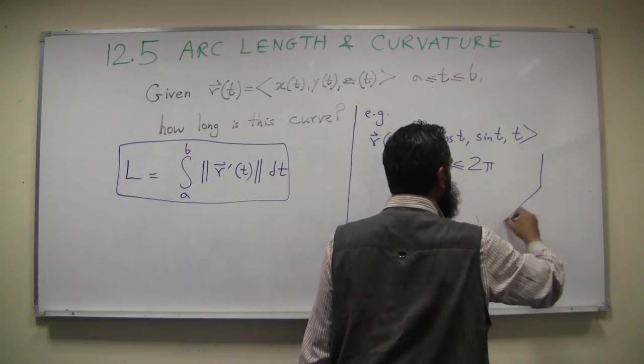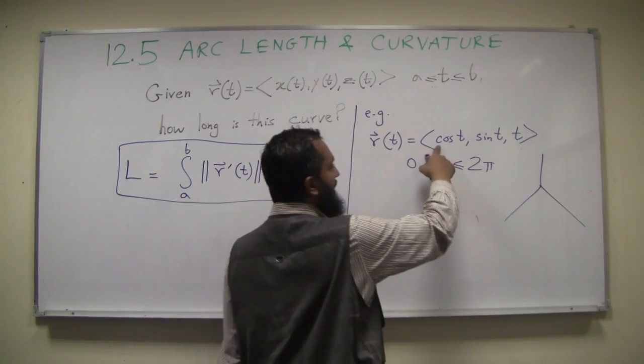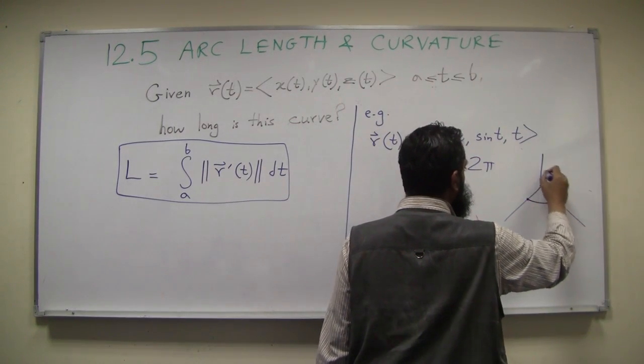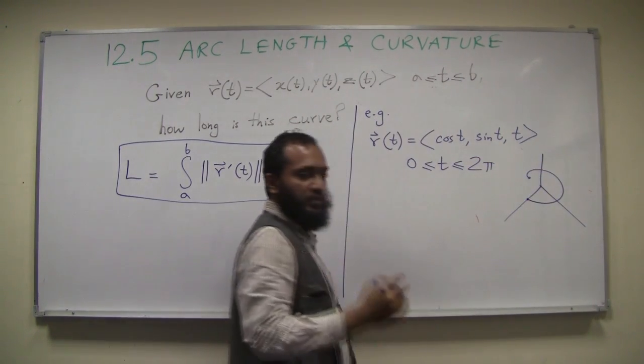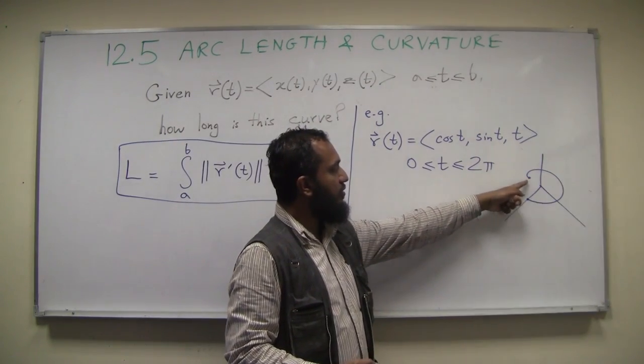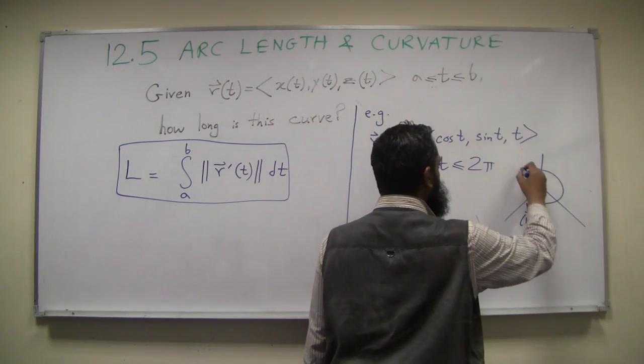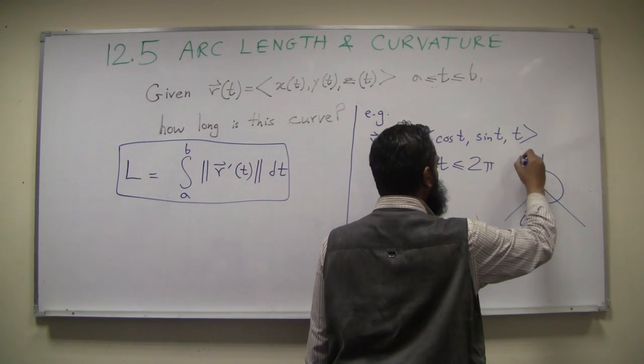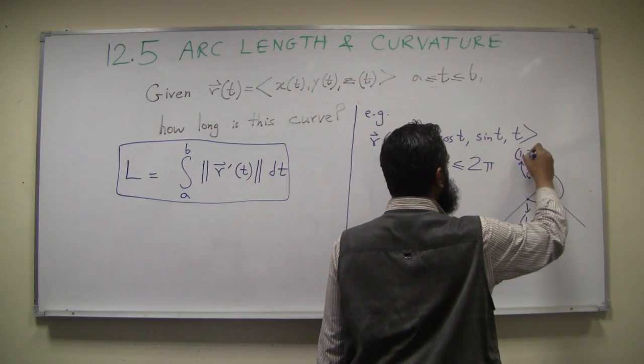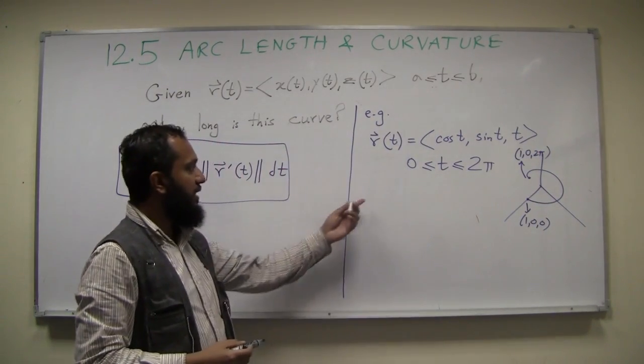Let's draw the graph of this roughly to see what we're talking about. When t is 0, this is (1, 0, 0), so here, and then it comes up. This is one turn of the helix going from (1, 0, 0) to—this point is (1, 0, 0) and this point is at 2π, so it is (1, 0, 2π).